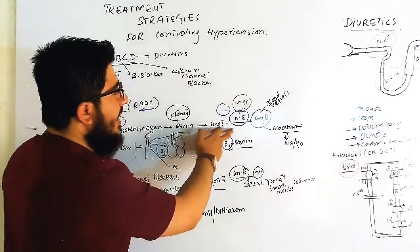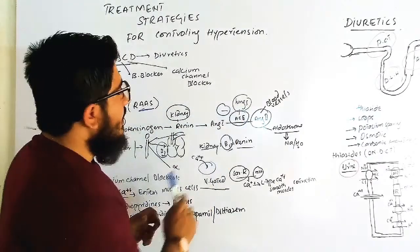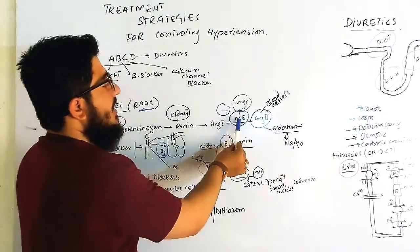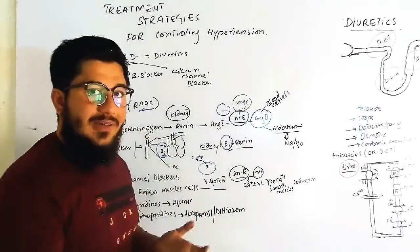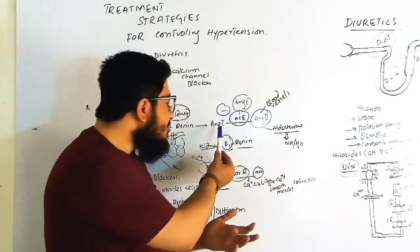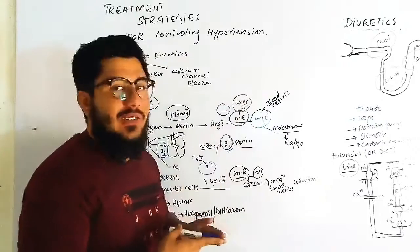Then lungs will release an enzyme, angiotensin converting enzyme. The name tells you this is an enzyme that converts angiotensin. What does it convert? Angiotensin 1 will be converted to angiotensin 2 by means of this enzyme which is released from the lungs.